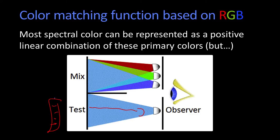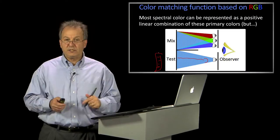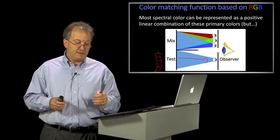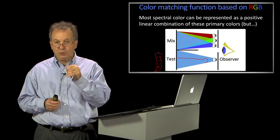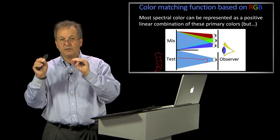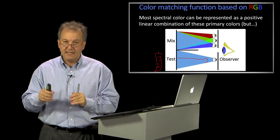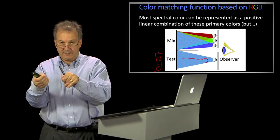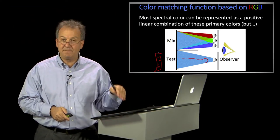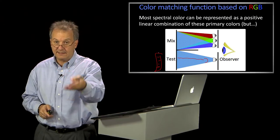And the observer's job, and here the observer's one great big eyeball, which is kind of creepy, but there's actually a person sitting there, would be to just adjust the amount of red, green, and blue light. And they were given a particular type of red, green, and blue, a particular wavelength of light. And they could put more or less of it, of each of them, to try to get it to match the test light that was being produced.